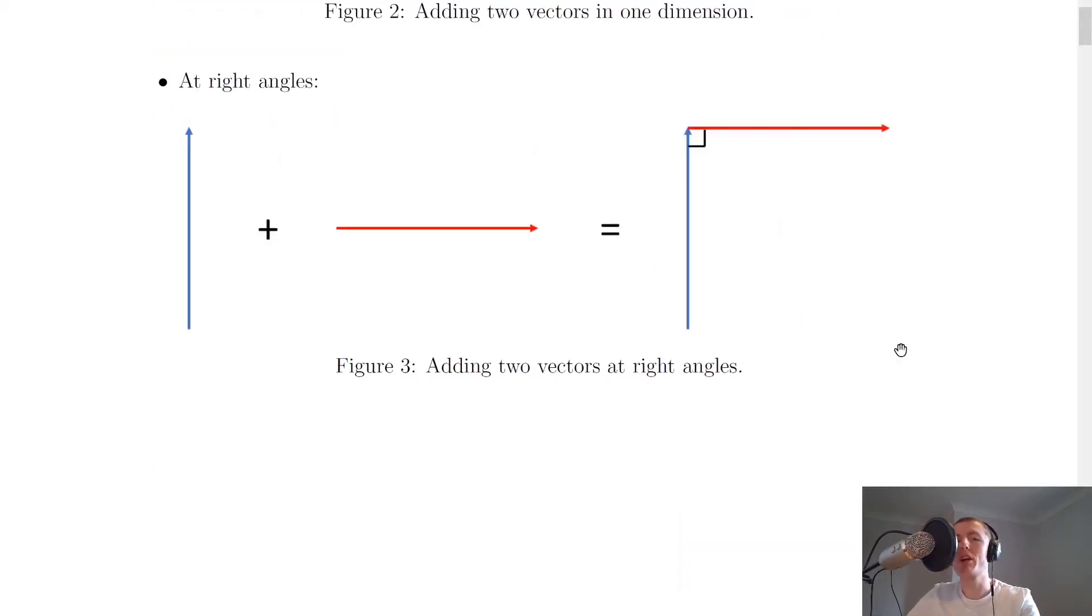But you might remember a more common example, which is adding two vectors together at right angles. Let's say we take a vector of this length pointing in this direction, and we add it to another vector pointing in this direction. Then what we would get once we add it nose to tail is this thing here. If I added the tail here to the nose here and moved it up, then it would look like this. And you'll see that it forms a right angle in there.